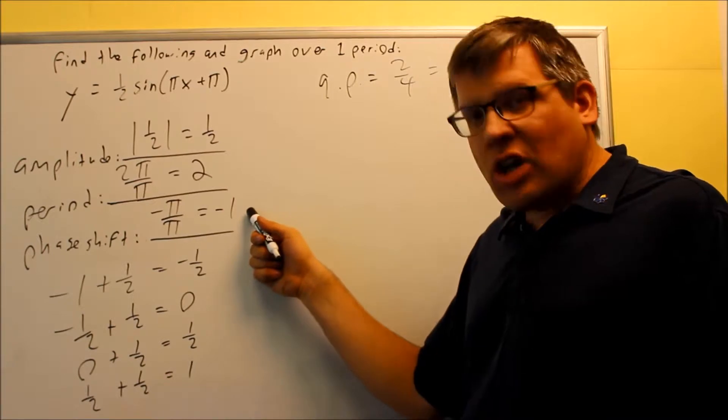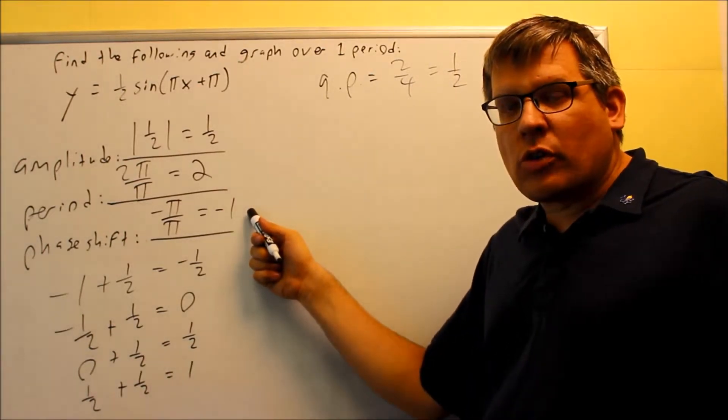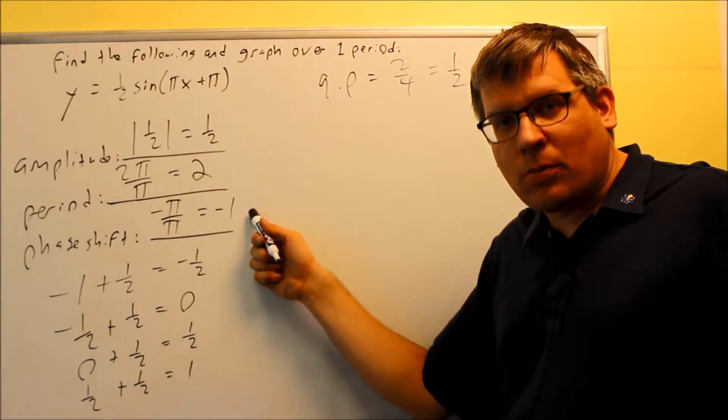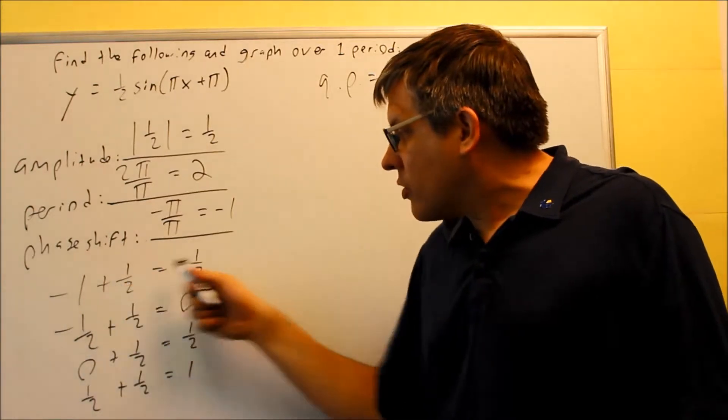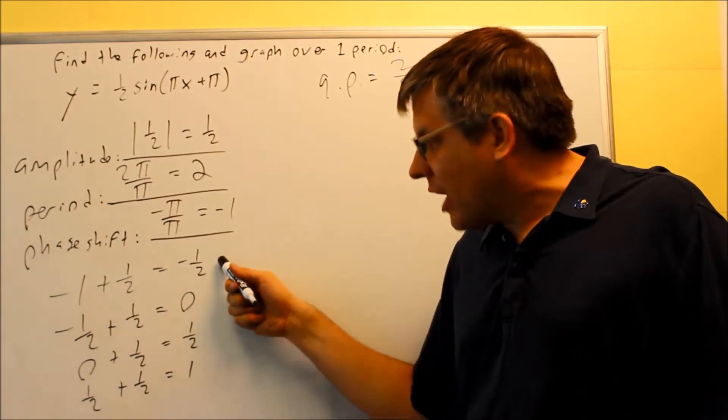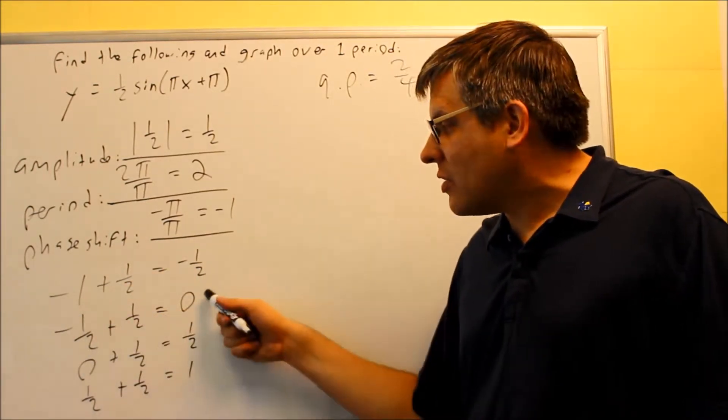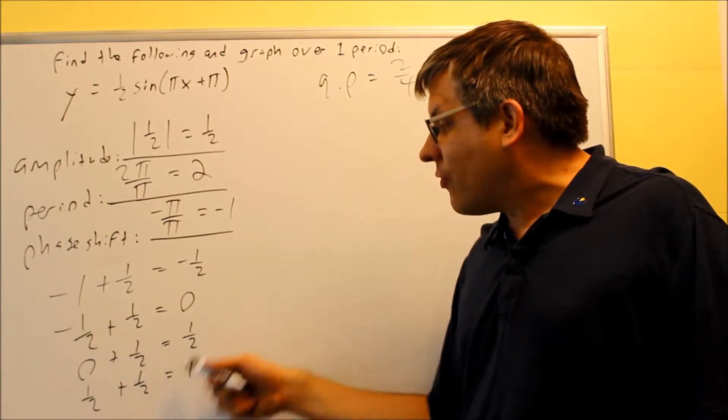So always start with the phase shift, phase shift will always be where the graph begins, that's always your first key point. We add the quarter point to it, we get negative 1/2. Then from that point, I add another 1/2, and I get 0, add another 1/2, and so forth.